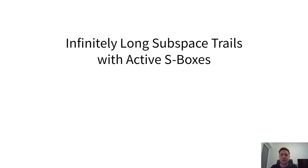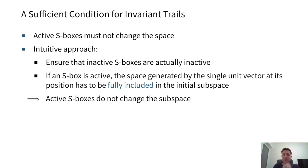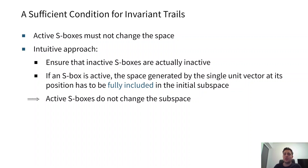Now let me also talk about the active S-boxes — searching for infinitely long subspace trails with active S-boxes. We know that if we have active S-boxes they must not change the space. The intuitive approach is to ensure that each inactive S-box is truly inactive, but if an S-box is active, then the space generated by a single unit vector at its position must be fully included in the initial subspace. If these two conditions are fulfilled, then the active S-boxes do not change the subspace.